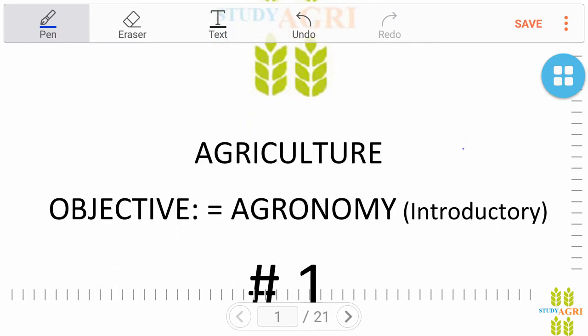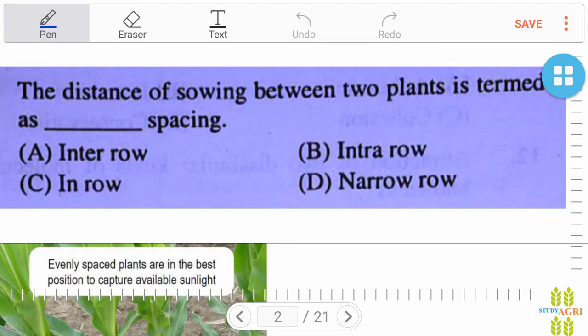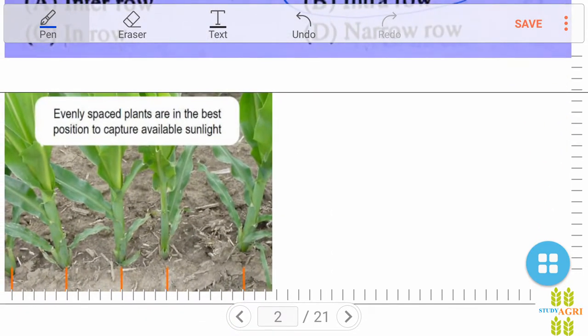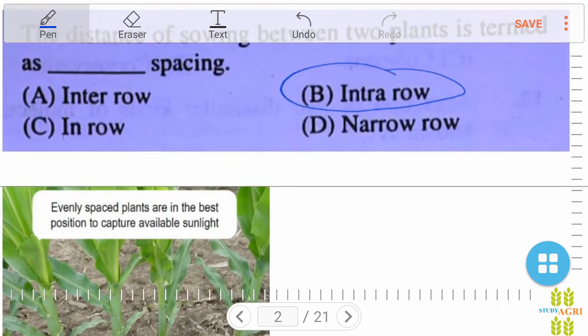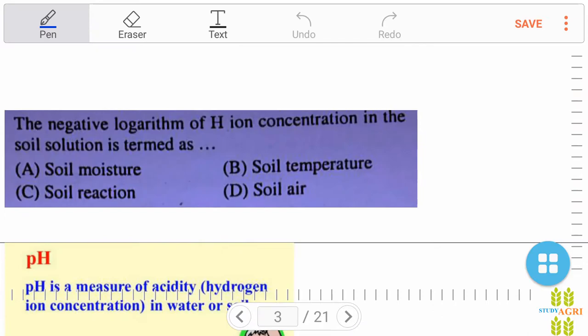Our question is: the distance of sowing between two plants is termed as inter row, intra row, in row, or narrow row? Our right answer is intra row. As we know, evenly spaced plants are in the best position to capture available sunlight. Yes, the right option is intra row.